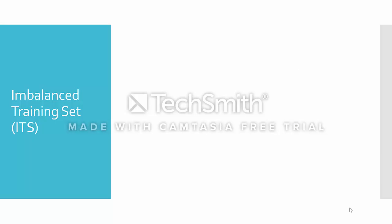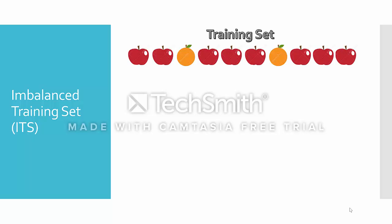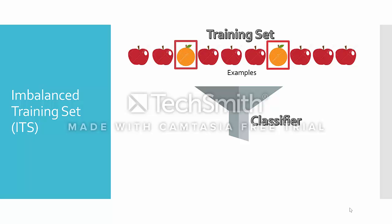A typical scenario is where we have a training set — each item here is called an example — from which a classifier is induced. This classifier is then assessed on an independent testing set. A complication arises when the training set is imbalanced, meaning a class is heavily underrepresented compared to the other classes.